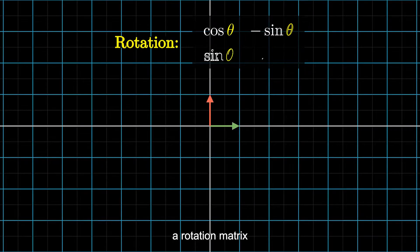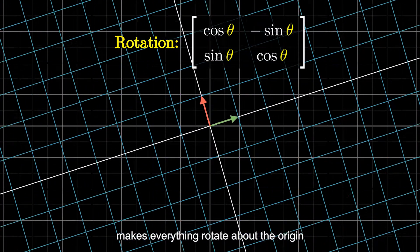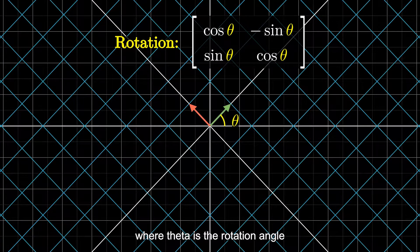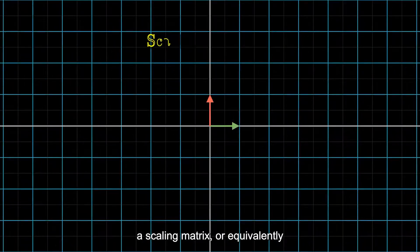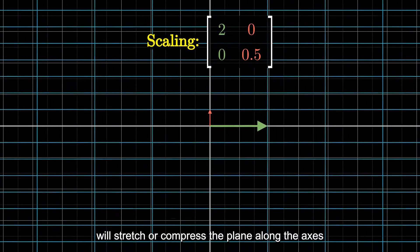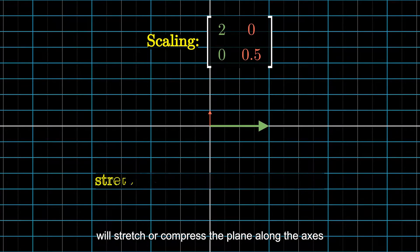A rotation matrix makes everything rotate about the origin, where theta is the rotation angle. A scaling matrix, or equivalently, diagonal matrix, will stretch or compress the plane along the axis.